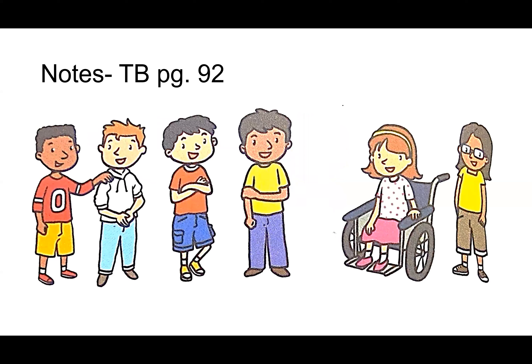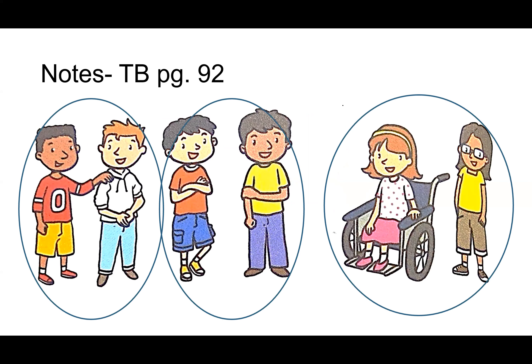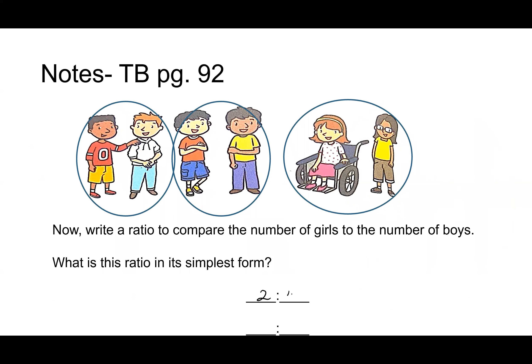Now let's write a ratio comparing girls to boys, working with units of two. What is the ratio of girls to boys, Ashley? We could say two to four. Can we simplify? We'd simplify to one to two. Ratios, just like fractions, we always want to give in simplest form when answering questions.